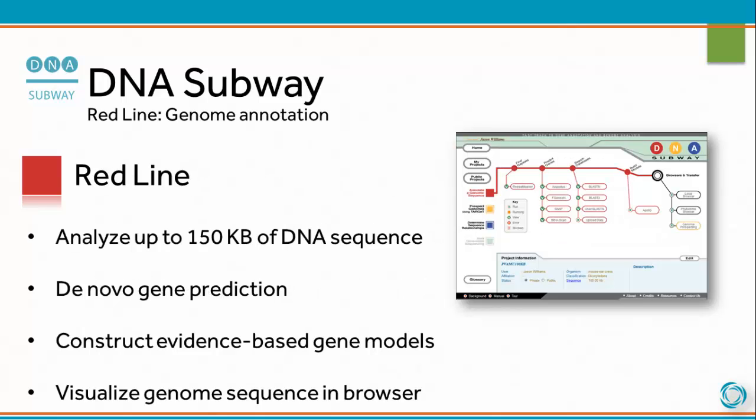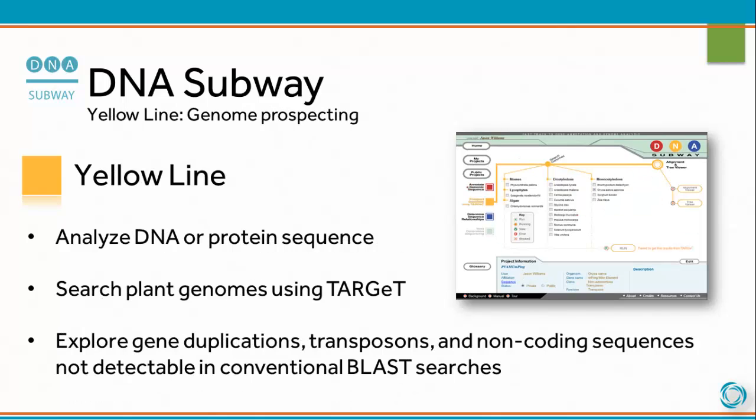The DNA Subway red line is devoted to genome annotation. You can analyze up to 150 kilobases of DNA sequence, use de novo gene predicting algorithms, construct evidence-based gene models, and visualize genome sequence in the browser.